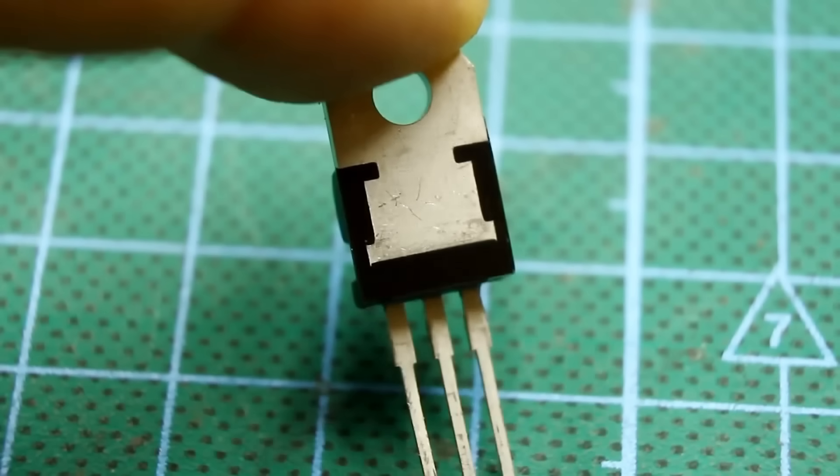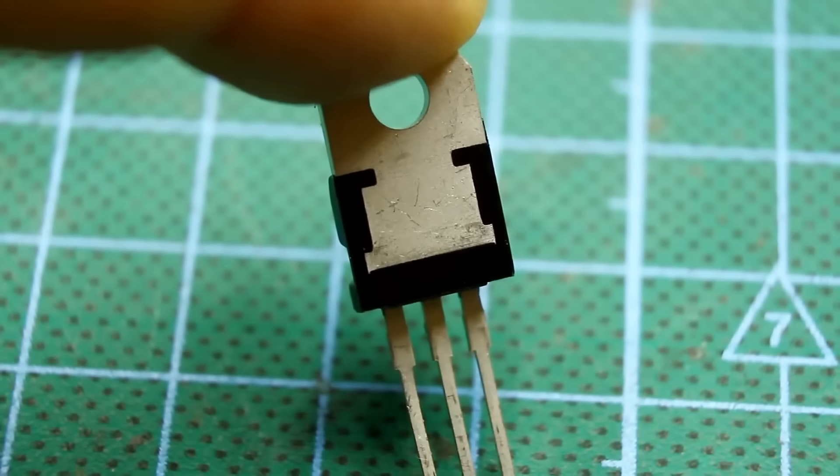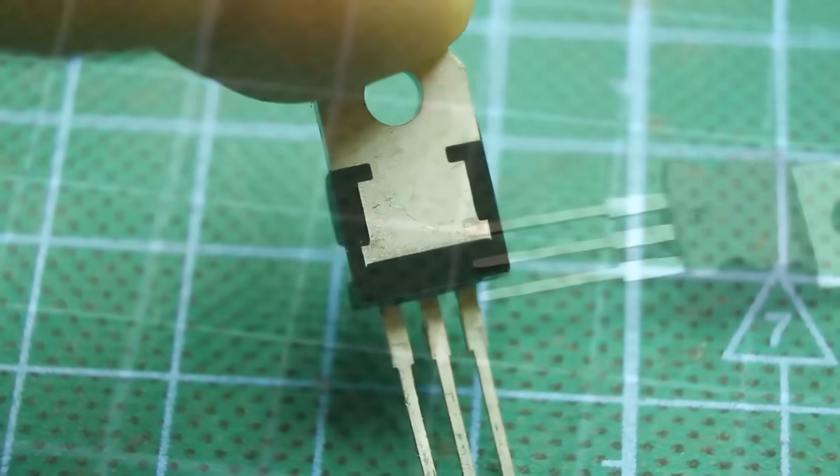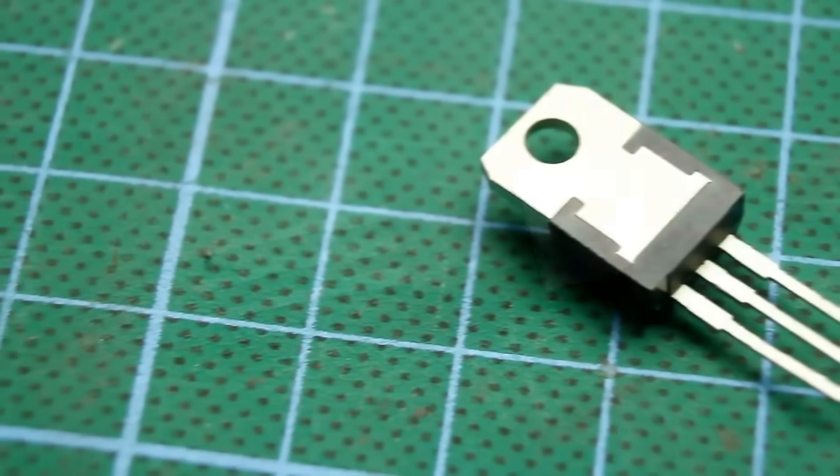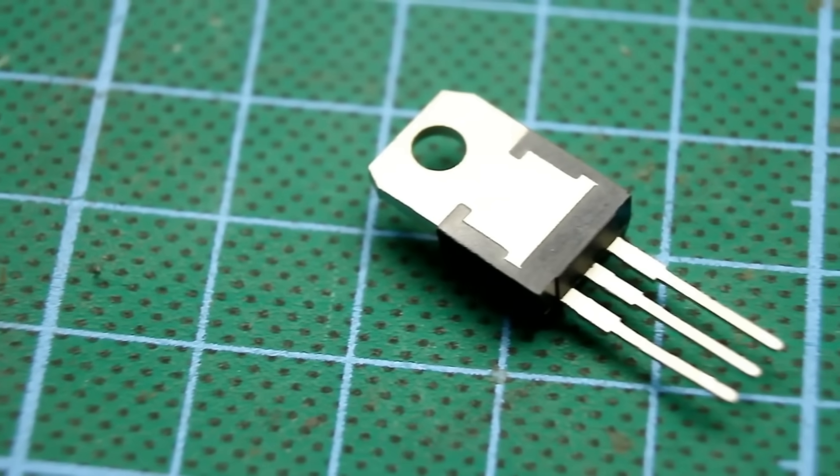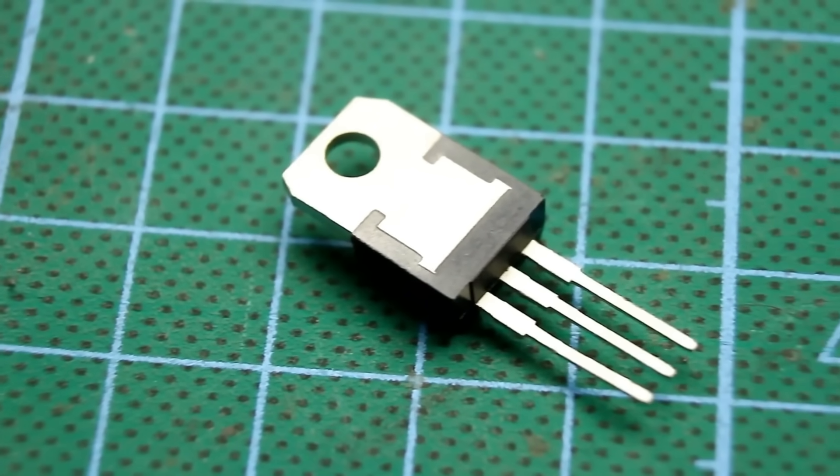The LM317 is a linear voltage regulator chip. It is time-tested, not fussy, costs pennies, has a simple connection scheme, and can also work as a current stabilizer. It has internal protection against short circuits and overheating.